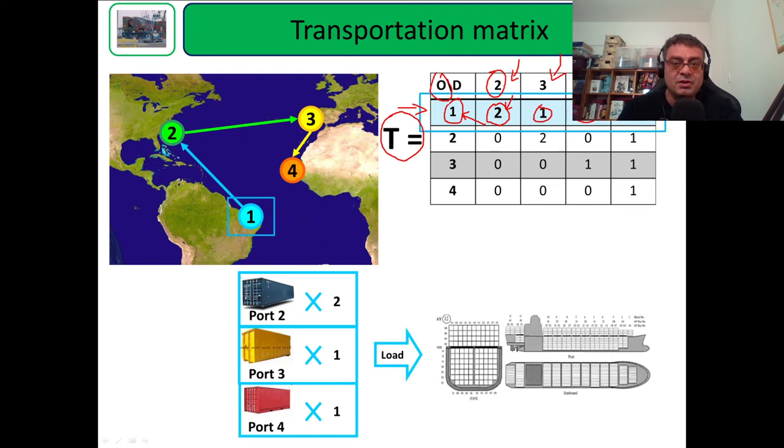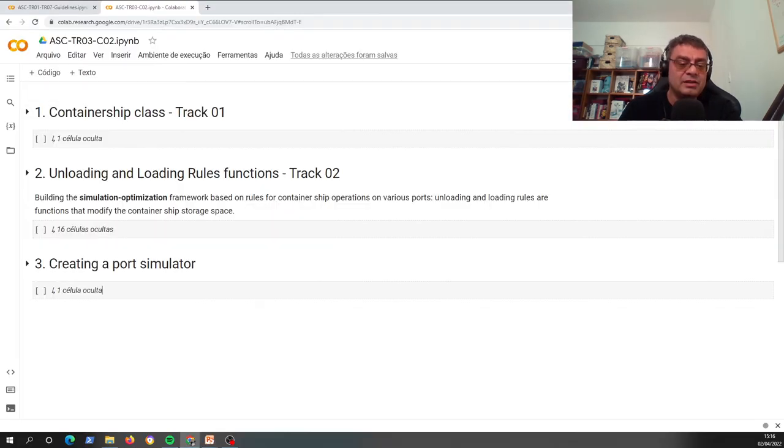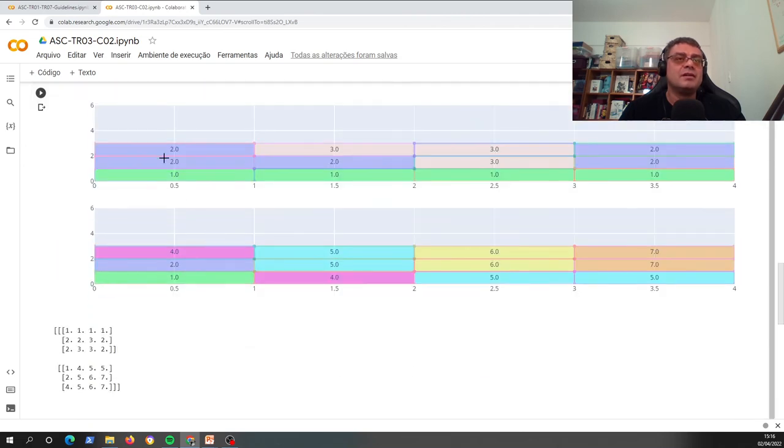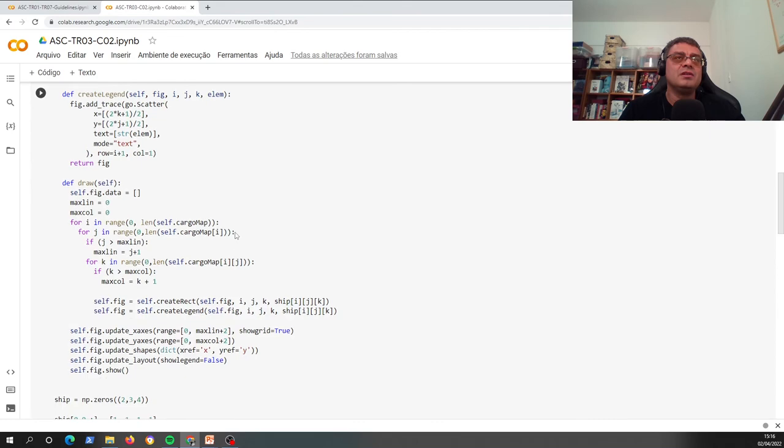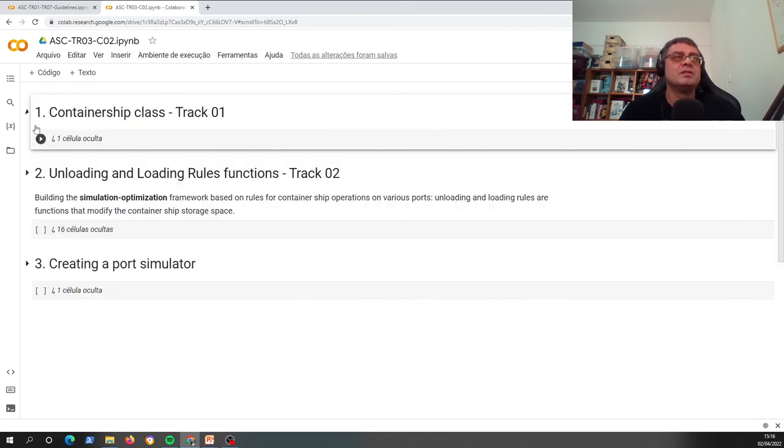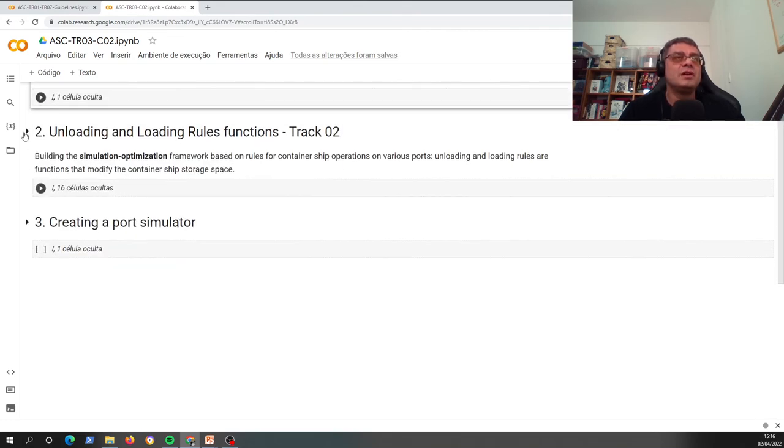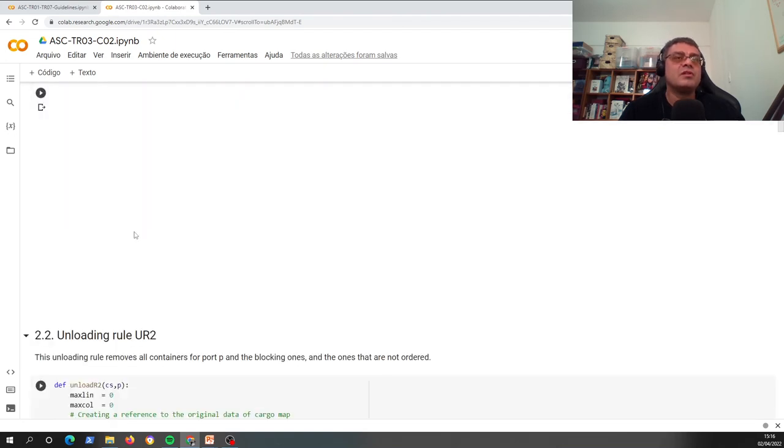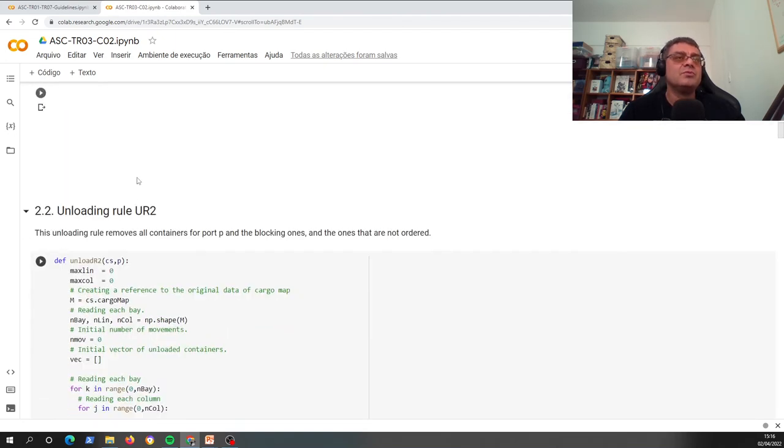Now we're gonna talk about what we have already coded in previous tracks. We already have some code that can create how you can load the container ship - it's here, we're gonna use it. And also we have all loading and unloading rules already defined through that second track.